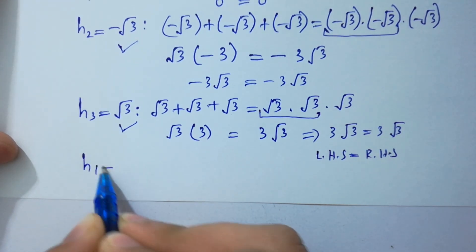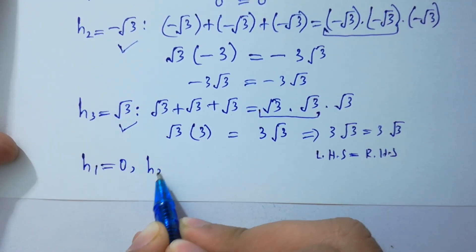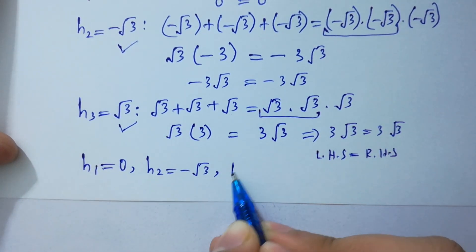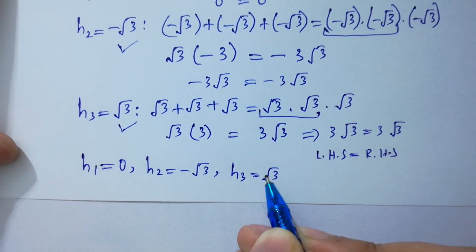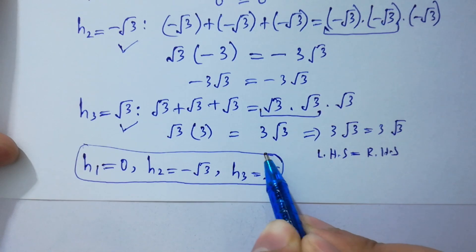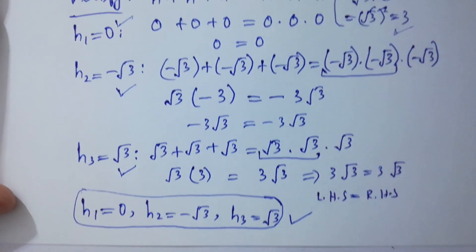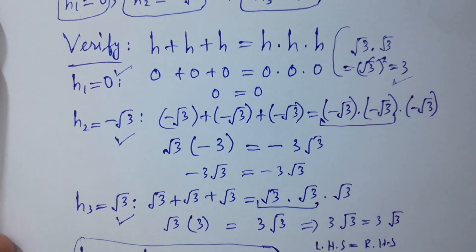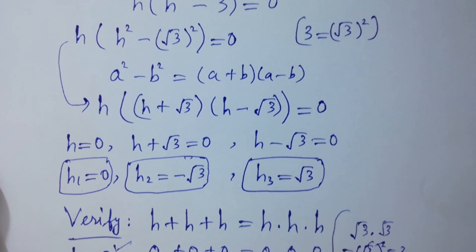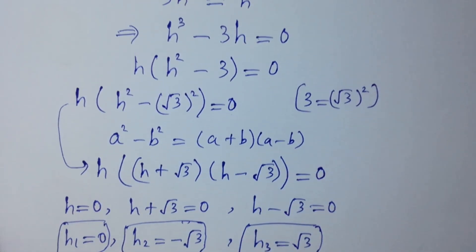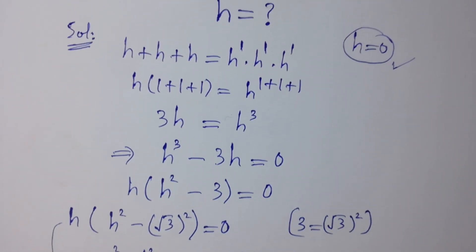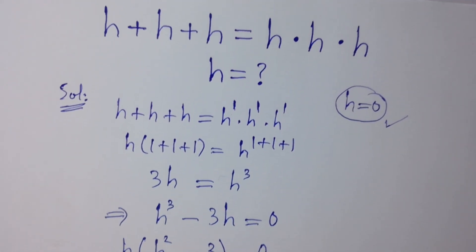So finally, h₁ equal to 0, h₂ equal to minus √3, and h₃ equal to plus √3. Thanks for watching this video. Please subscribe to this channel to get notifications of new videos, and don't forget to share these videos with your classmates and friends. You can also visit the playlist of this channel to learn more.